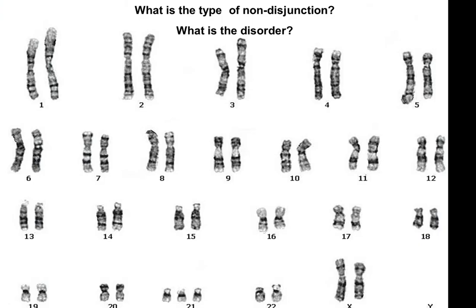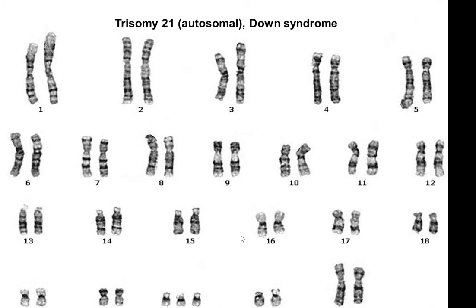Notice I circled something — down here at chromosome pair number 21, there are three chromosomes. If you said trisomy 21, meaning it's got three chromosomes in the 21st spot where we're supposed to have two, you're correct. This is labeled an autosomal disorder, and the name of this one is Down syndrome — probably the most widely known one.